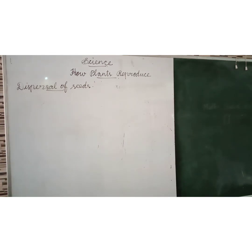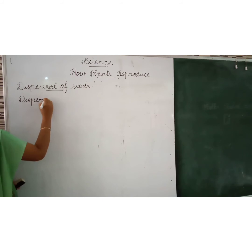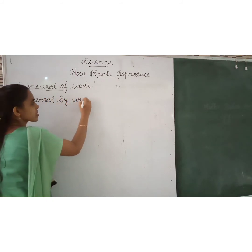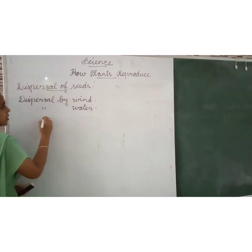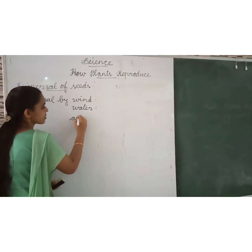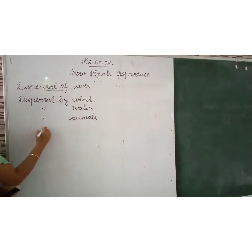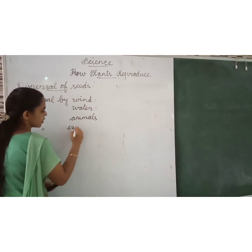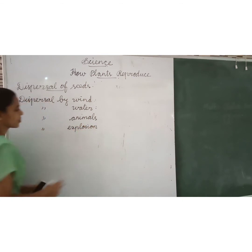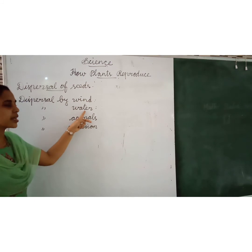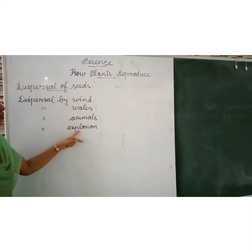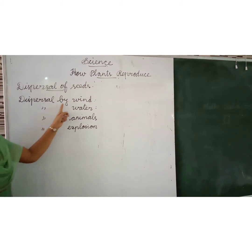What are the four types of dispersal? Dispersal of seeds has four types. First is dispersal by wind. Second is dispersal by water. Third is dispersal by animals. Fourth is dispersal by explosion.